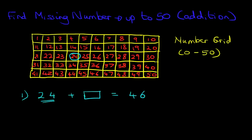Now we have to end at 46. Now can you find 46? It is over here — I am going to put another circle around it. The objective is that we have to start at 24 and end at 46. Now you can count in tens and so forth. I am just going to do it the long way around so we fully understand this.